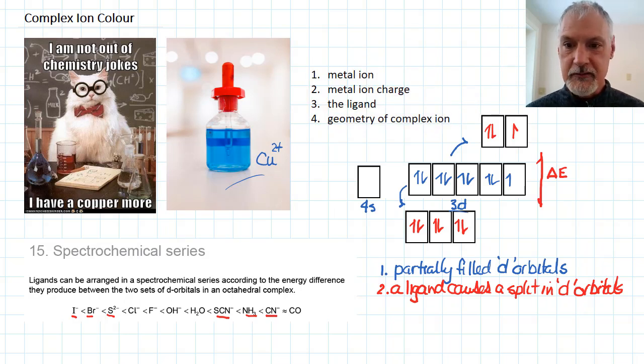So the metal ion itself, whether I'm using iron or copper or vanadium, they all can have some effect. The charge on the ion. Generally, if the charge goes up, the change in energy between these two levels will also go up.